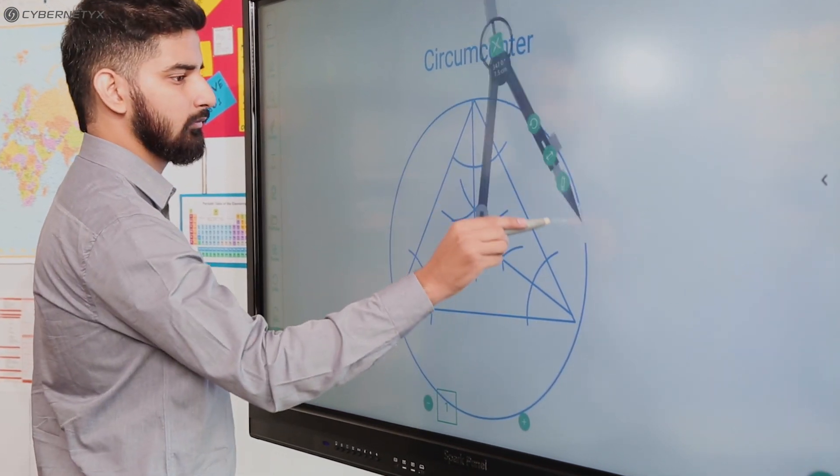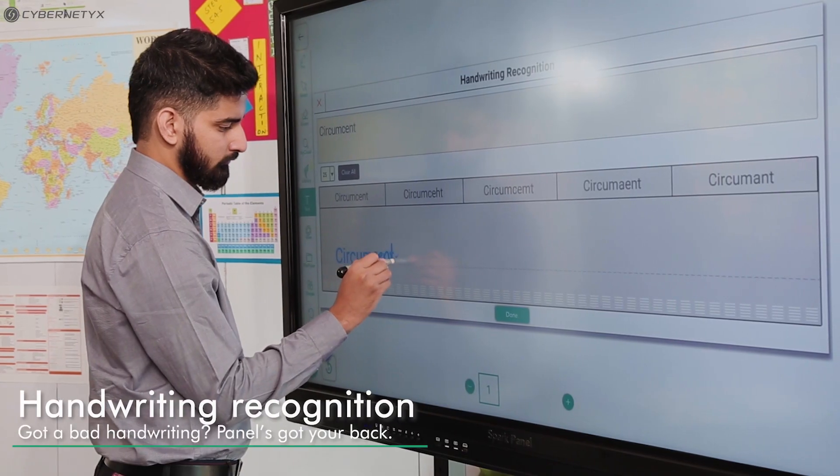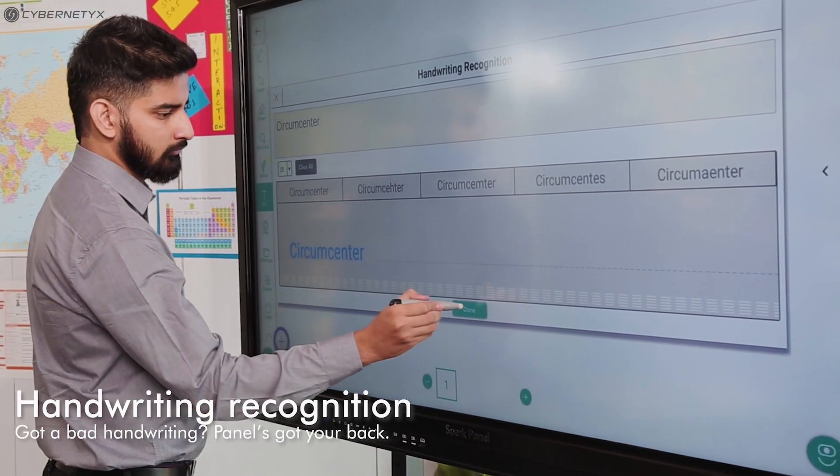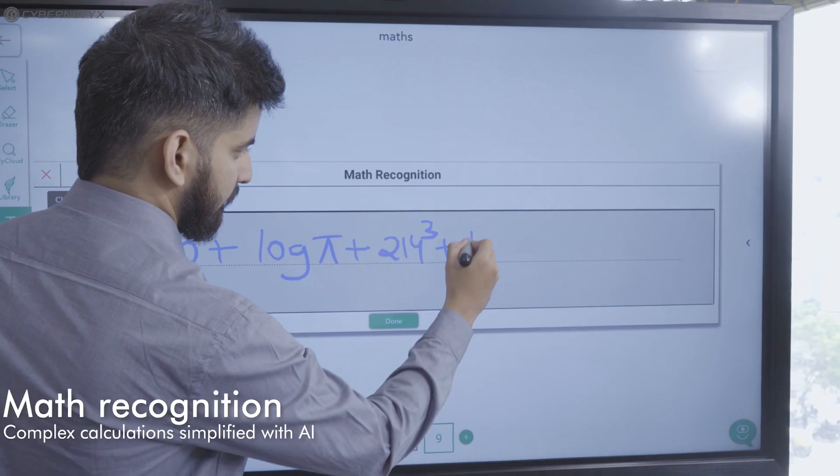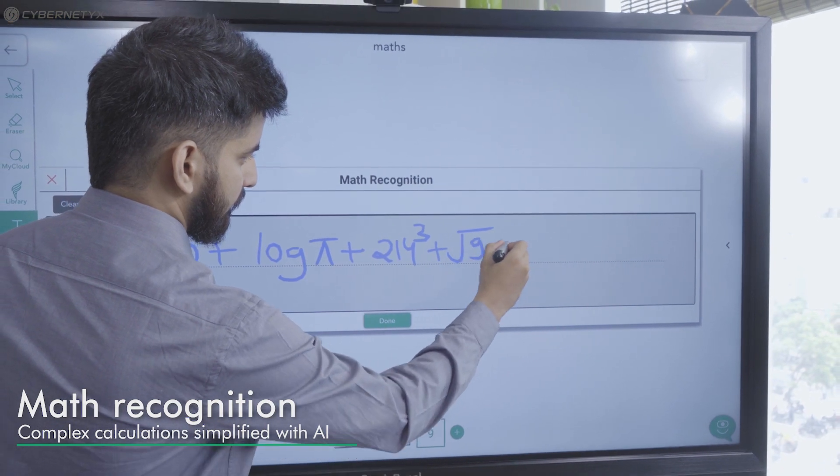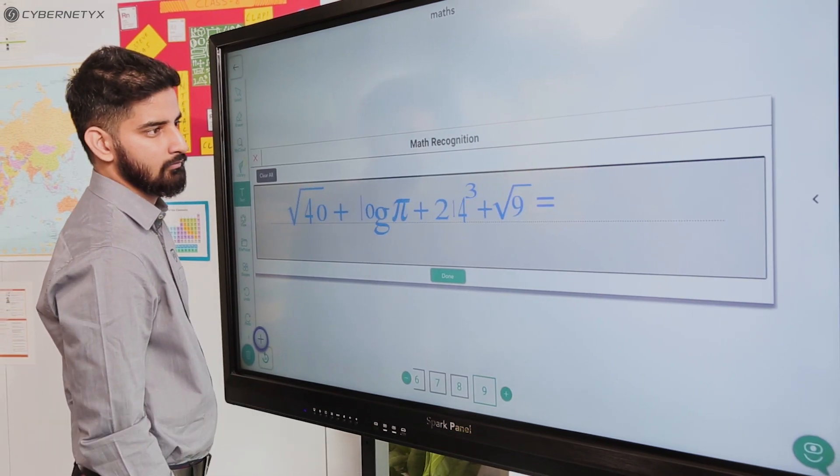SparkPanel has the required drawing tools. Want to write something and convert it into text automatically? The panel does that for you. Besides, it also identifies mathematical formulas and functions and solves them when you want.